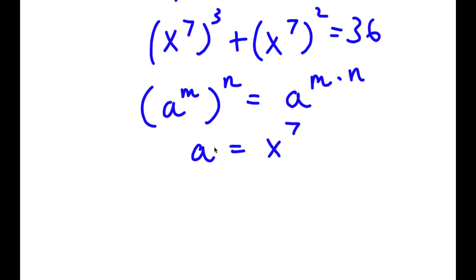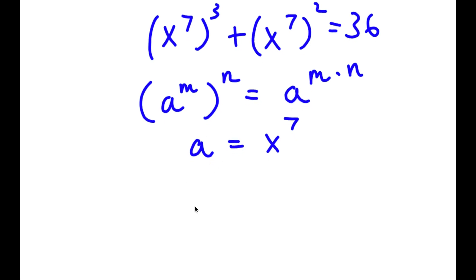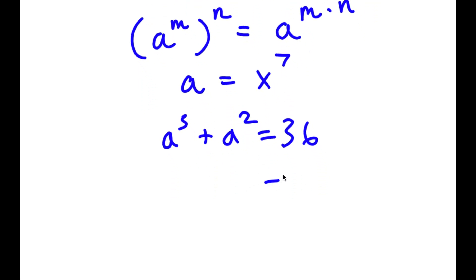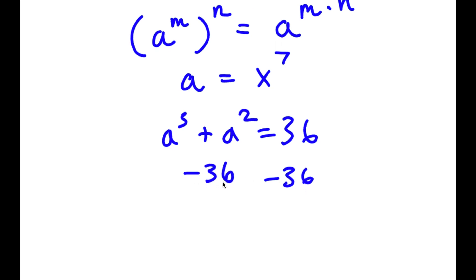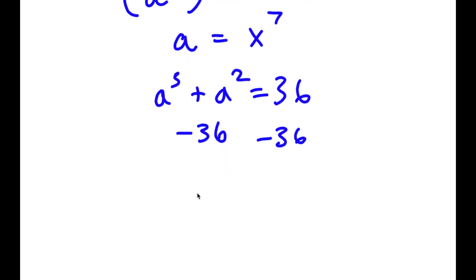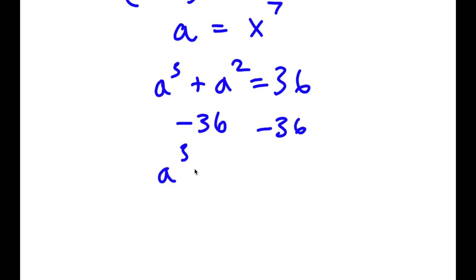So now if I replace a for x to the power of 7, I get a to the power of 3 plus a squared is equal to 36. Now I can subtract 36 on both sides, so I have a to the power of 3 plus a squared minus 36 is equal to 0. And as you see, we have a cubic equation.